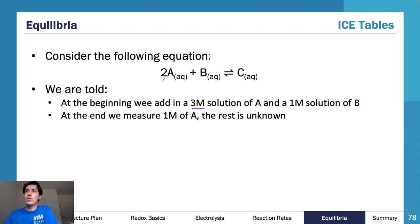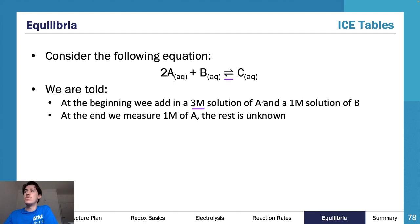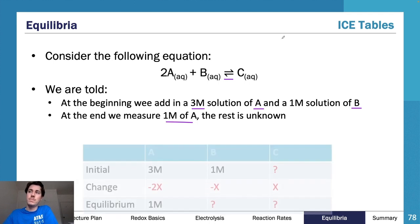We've got an equation: 2A + B goes to and comes back to C — a double arrow, so it's an equilibrium system. At the beginning we had three moles of A and one mole of B. At the end we measure one mole of A; the rest is unknown.